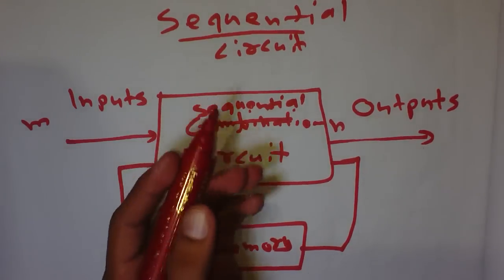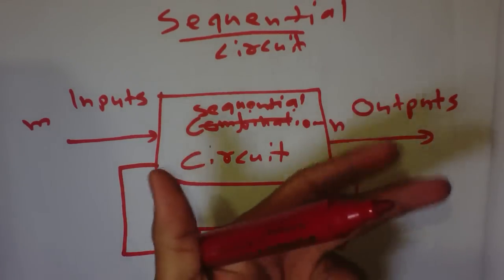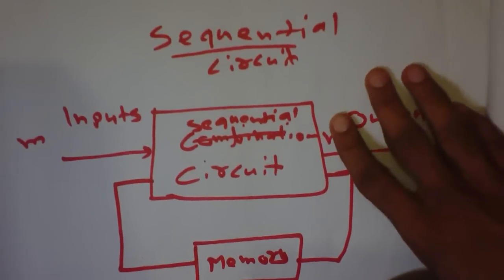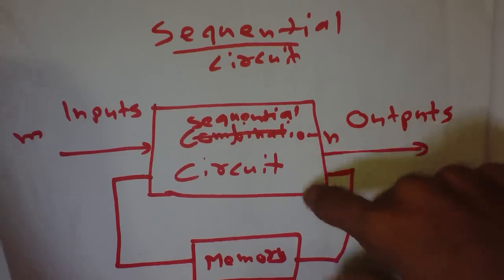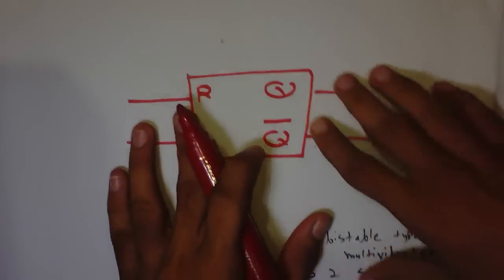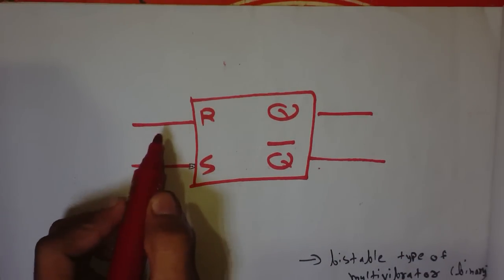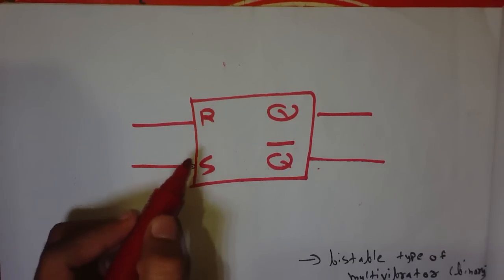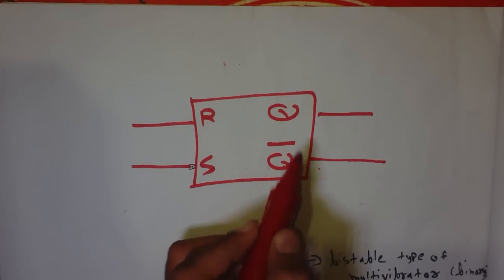A flip-flop has several inputs and two outputs, and both outputs are complementary to each other. Let's look at one type of flip-flop to understand the concept. This is the diagram of the RS type flip-flop. It has two inputs: S means Set and R means Reset. It has two outputs: Q and Q-bar, and both values are complementary to each other.